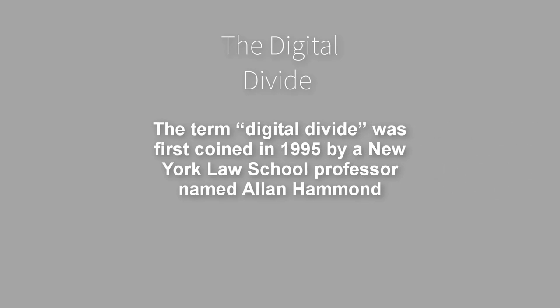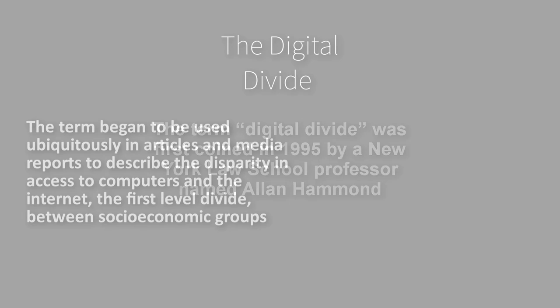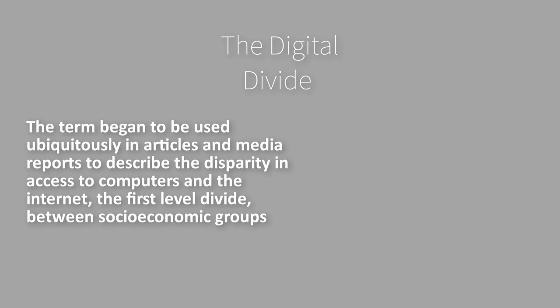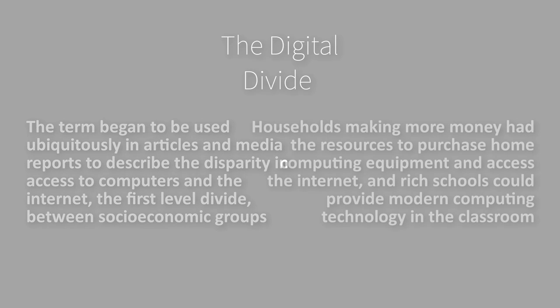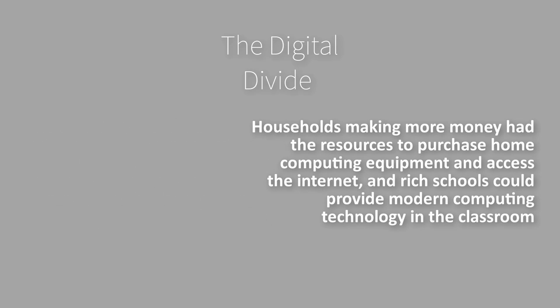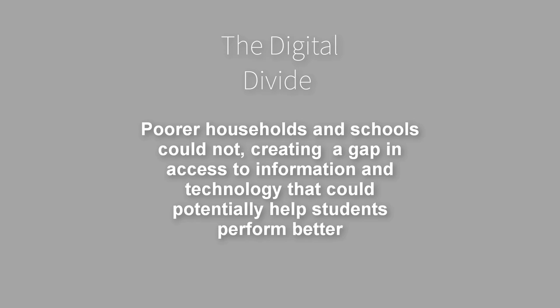The term digital divide was first coined in 1995 by a New York law school professor named Alan Hammond. The term began to be used ubiquitously in articles and media reports to describe the disparity in access to computers and the Internet — the first-level divide between socioeconomic groups. Households making more money had the resources to purchase home computing equipment and access the Internet, and rich schools could provide modern computing technology in the classroom. Poorer households and schools could not, creating a gap in access to information and technology that could potentially help students perform better.